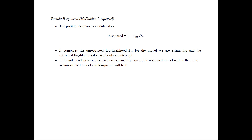Another goodness-of-fit measure is the pseudo R-squared, also called McFadden's R-squared. It is calculated as 1 minus the log likelihood of the unrestricted model divided by the log likelihood of the restricted model — where all beta coefficients are restricted to zero, leaving only an intercept. If the independent variables have no explanatory power, the unrestricted model resembles the restricted one, this ratio approaches 1, and the pseudo R-squared approaches 0. A value above 0.25 generally indicates a decent model.